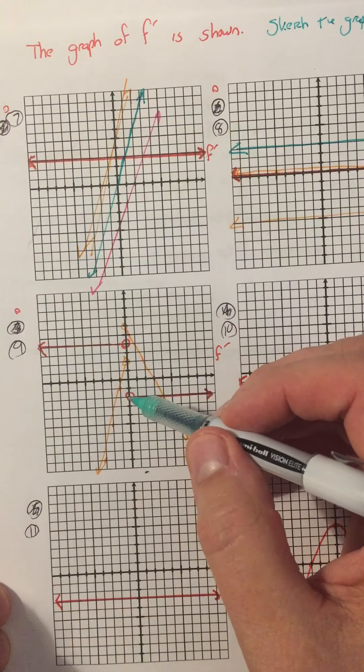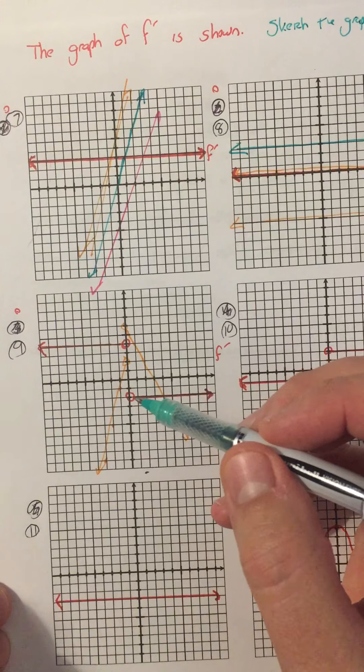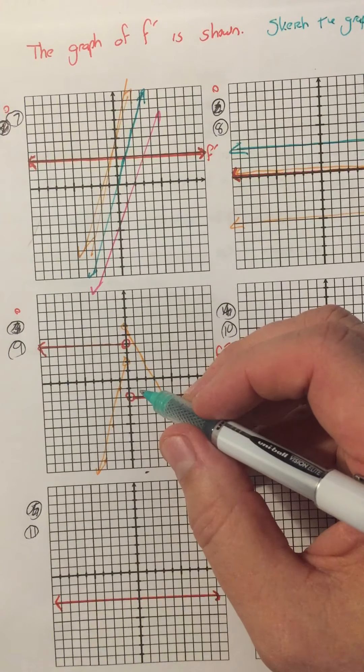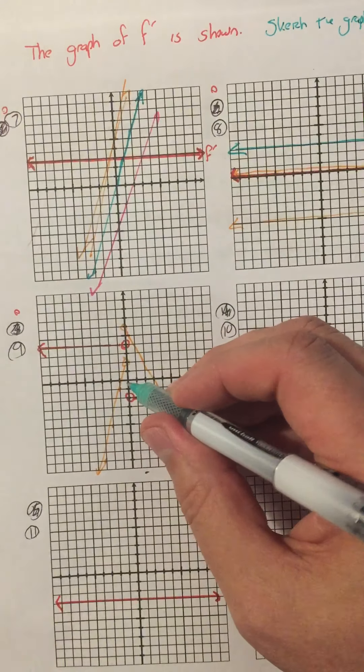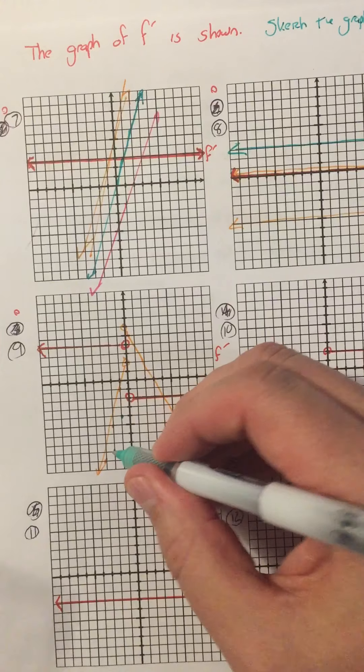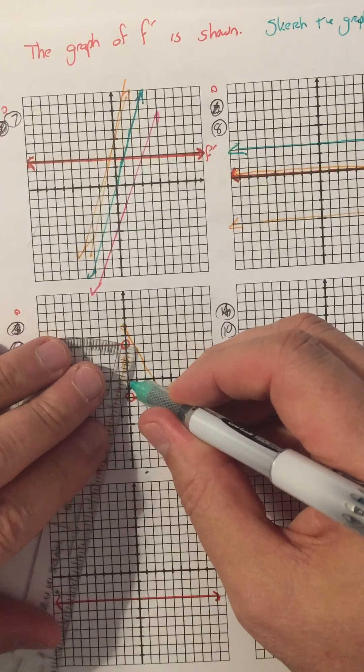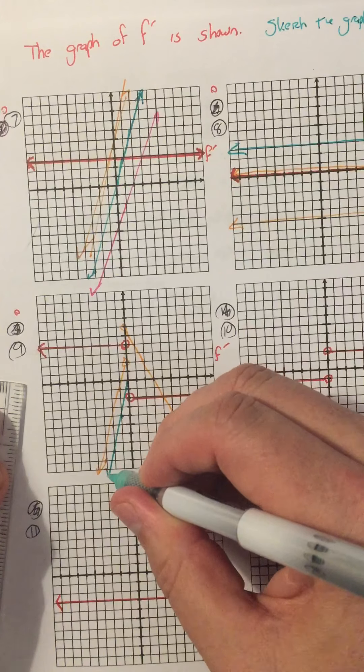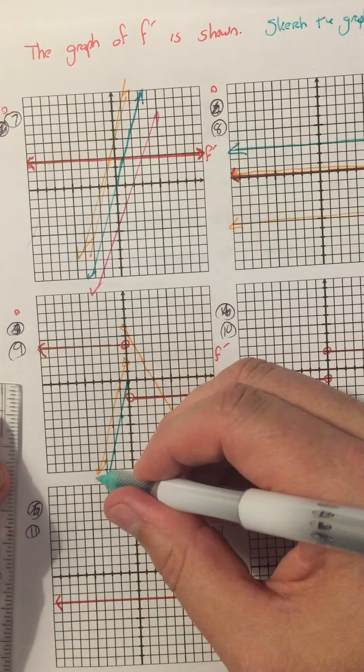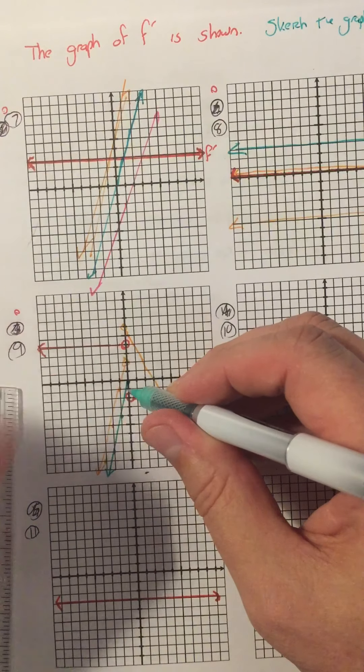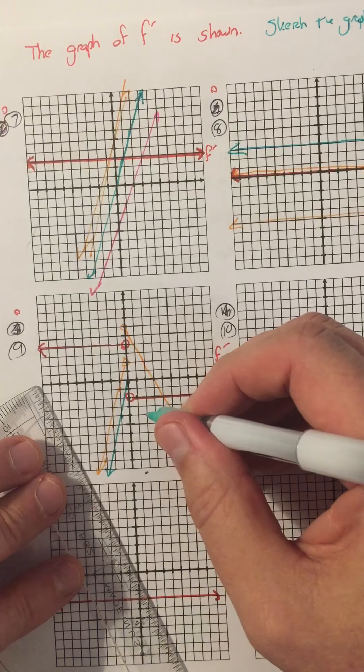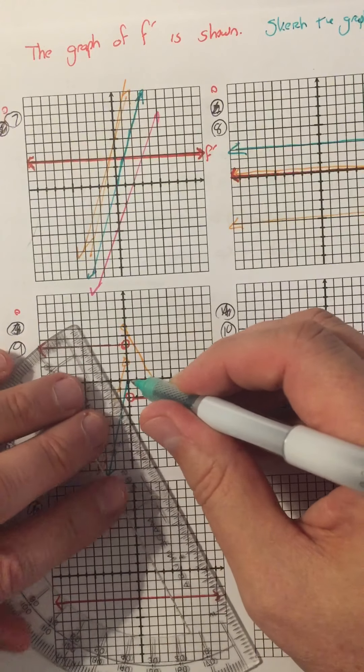Just because f' has a jump discontinuity, that does not mean that f has a jump discontinuity. f could, in fact, look like this. Let's try to get a slope 4, 2, 1, and 4. It could look like this, and actually have a point here, and then, so that's slope positive 4. And then on the other side, we have slope negative 2, but we'll actually connect them.